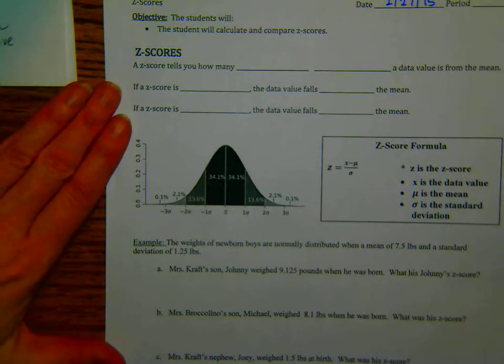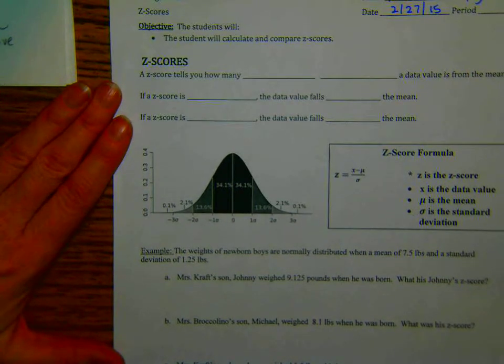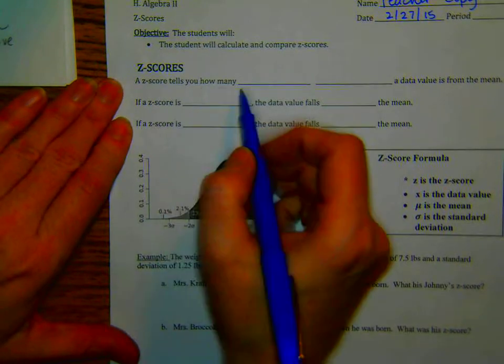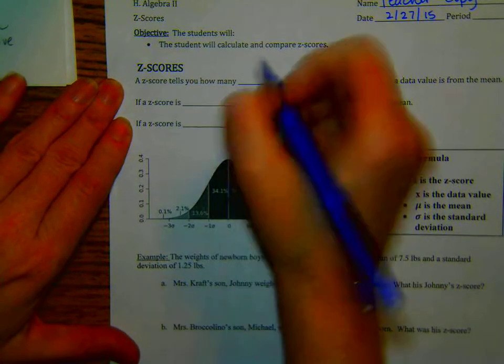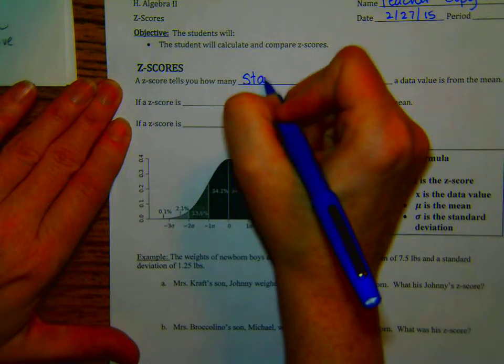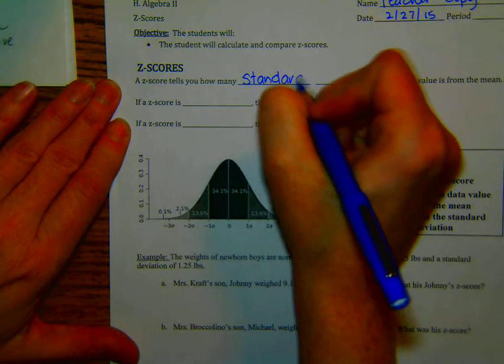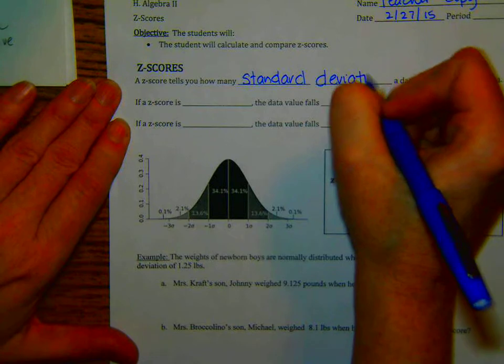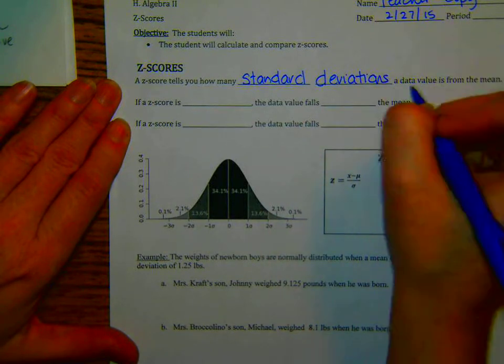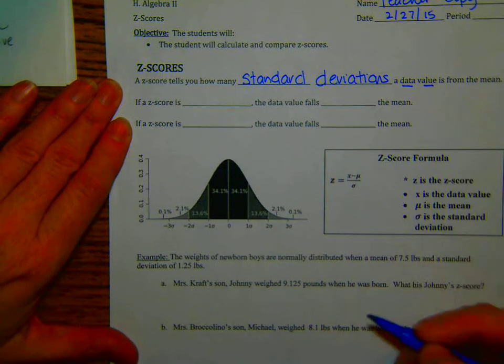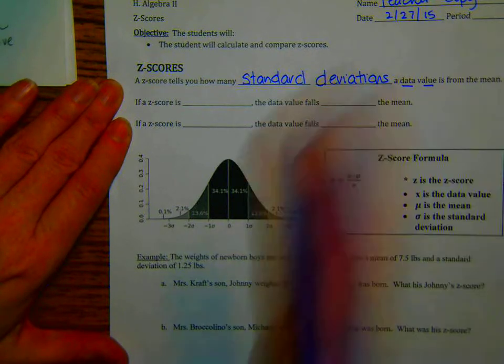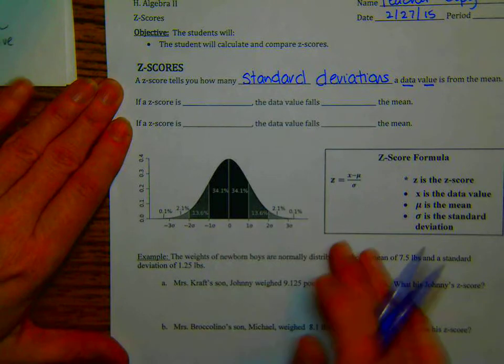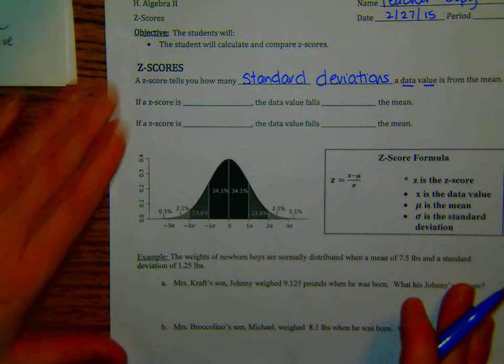We're going to calculate and compare z-scores. What is a z-score? Well, a z-score will tell us how many of these standard deviations that a data value is from the mean. So the mean is the center of the data, the average of the data, and how far is a certain x value from that point.